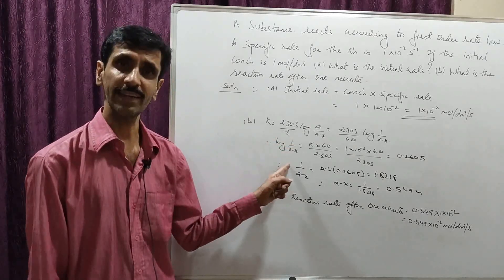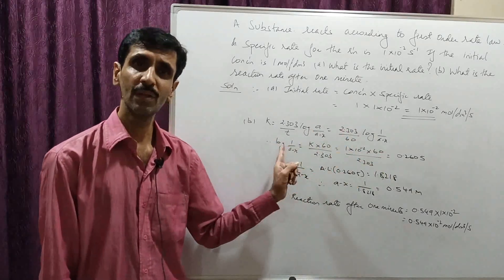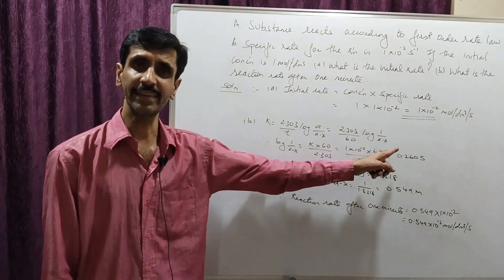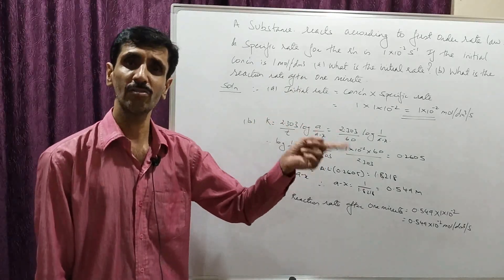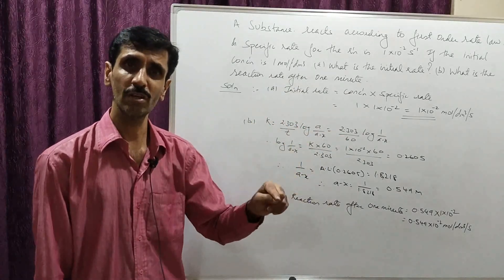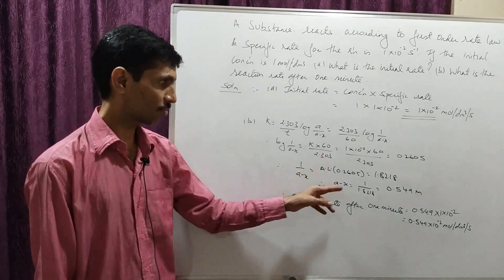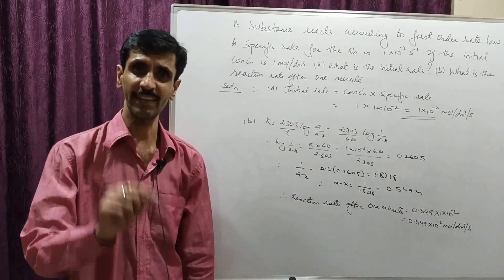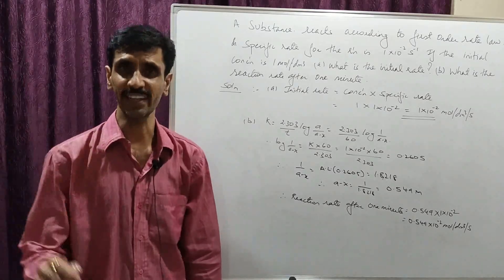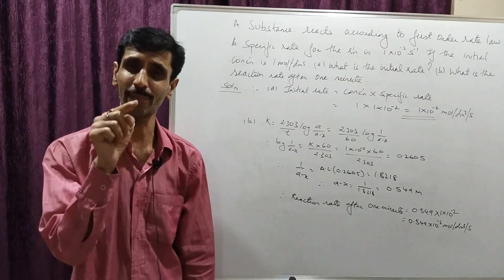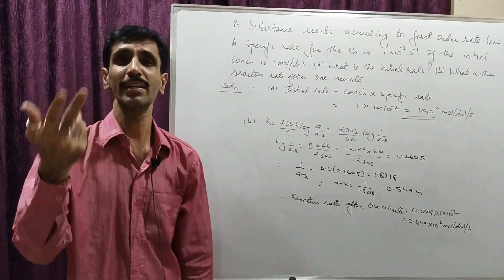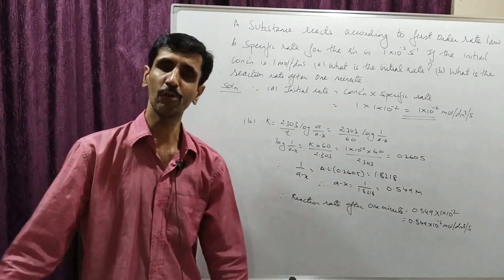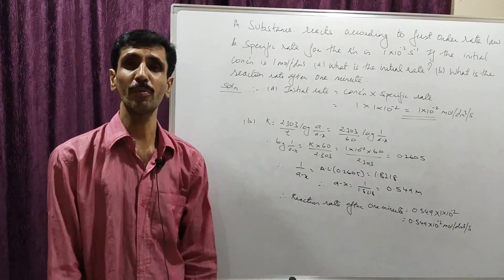The value 0.2605 equals log(1 / (a−x)). Dividing both sides by log, the logs cancel, leaving 1/(a−x) on the left. On the right hand side, dividing by log gives us the anti-log. Taking the anti-log of 0.2605, we get 1.8218. So 1/(a−x) = 1.8218.